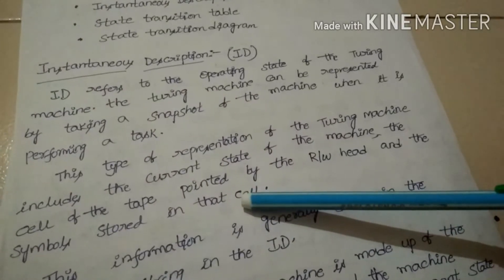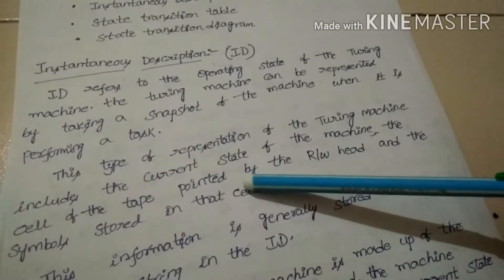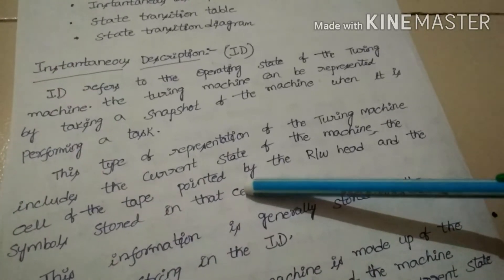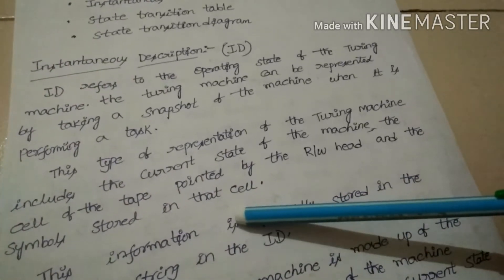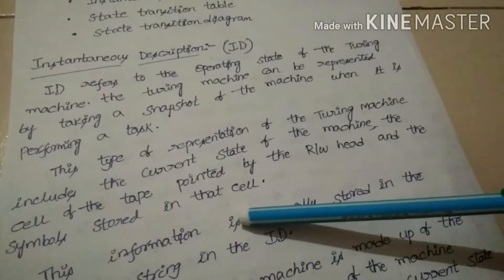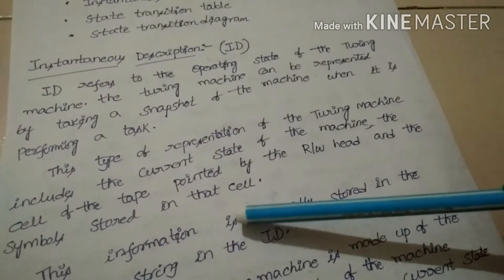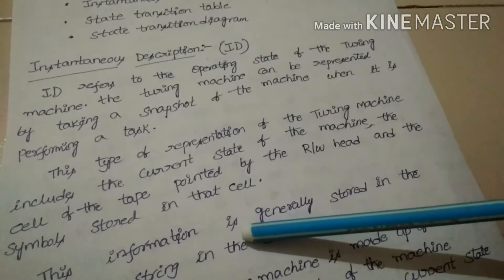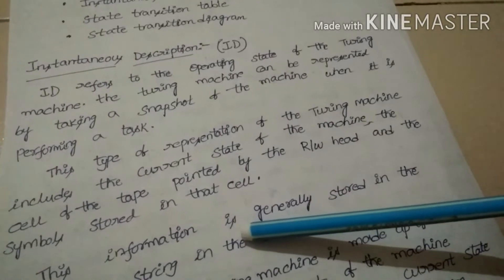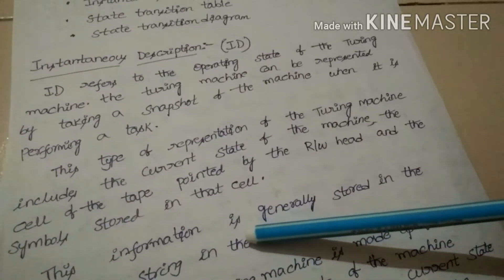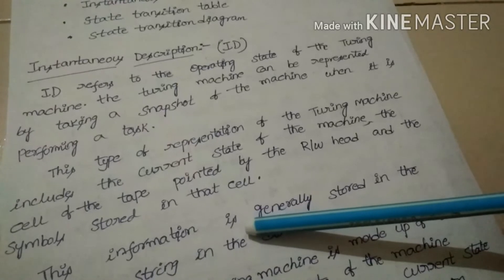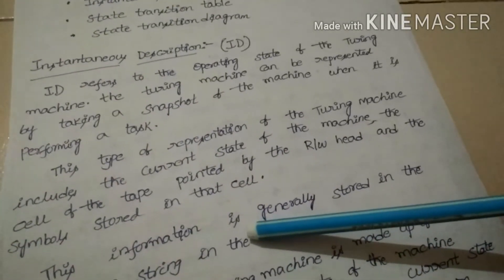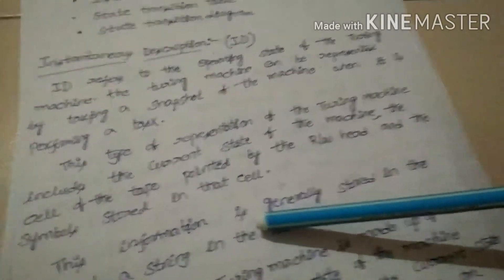This type of representation of the Turing machine includes the current state of the machine, the cell of the tape pointed to by the read-write head, and the symbol stored in that cell. The information is stored in the form of a string in the ID. The ID of the Turing machine is made up of the input string and the current state of the machine. It is created by inserting the current state of the machine to the left of the symbol on which the read-write head has been placed.